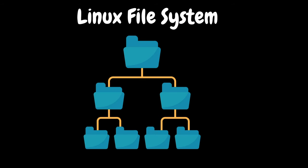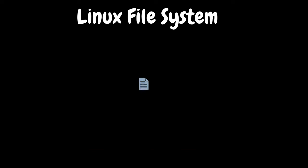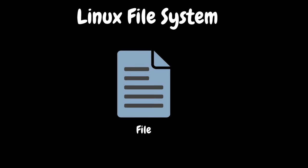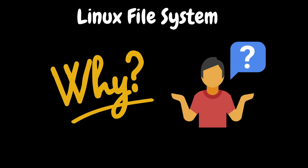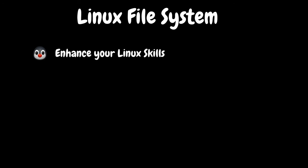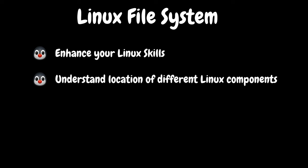We will start our discussion with the Linux file system. On a Linux system, everything is considered to be a file. The structure and logic rules used to manage files and their names are called file systems. Linux file system is a built-in layer of a Linux operating system used to handle data management of the storage — basically it controls how data is retrieved and stored. Having a solid understanding of the Linux file system will enhance your Linux skills and help you understand the location of different Linux components, saving time in navigation.